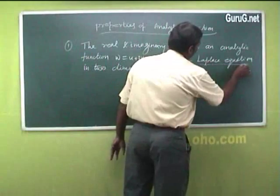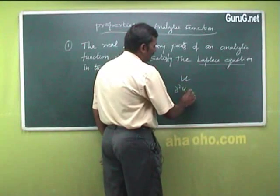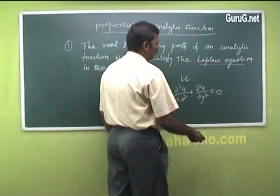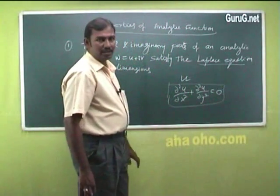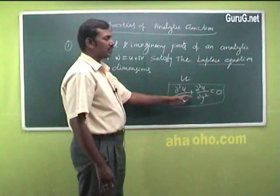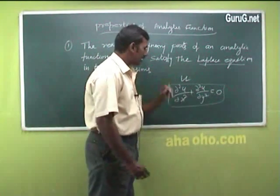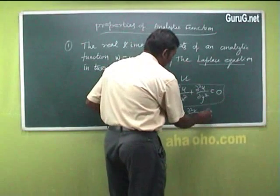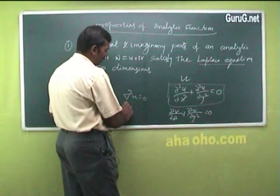What do we mean by Laplace equation? Suppose u is a real valued function, then ∂²u/∂x² + ∂²u/∂y² = 0. This equation is called the Laplace equation. Here the real and imaginary parts of an analytic function satisfy this Laplace equation. That means we have to prove ∂²u/∂x² + ∂²u/∂y² = 0 and ∂²v/∂x² + ∂²v/∂y² = 0.